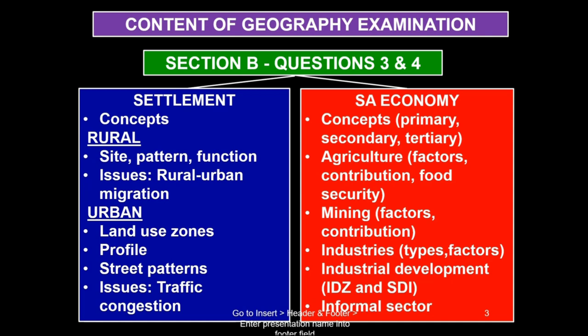Urban areas develop into land-use zones. So what do we use the different zones for? If you look at a town, do they all look the same? Is there a profile? Then we have street patterns, and eventually, just as with your rural areas, all kinds of issues start to develop.